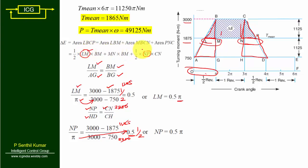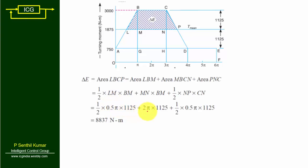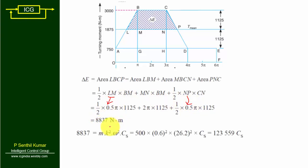Now applying the values: ΔE = ½ × 0.5π × 1125 + 2π × 1125 + ½ × 0.5π × 1125. Calculating this gives ΔE = 8837 Newton meters. We now apply the formula ΔE = Iω²·CS where I = MK².